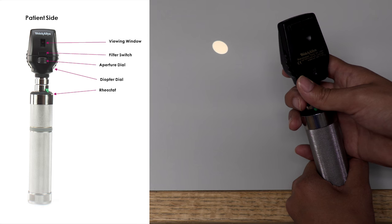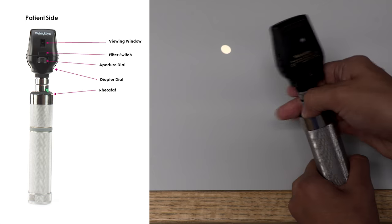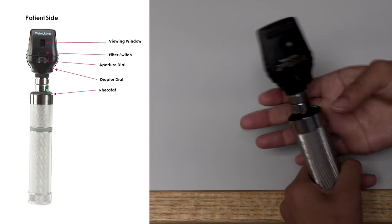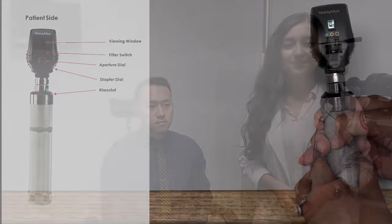The medium light allows you to look at an undilated pupil in a dark room. Now that you know the different parts and settings of the direct ophthalmoscope, we can learn the exam technique.